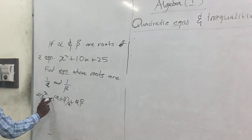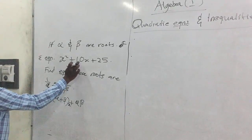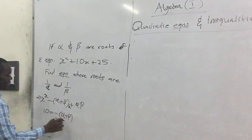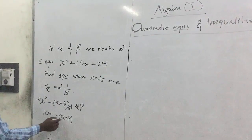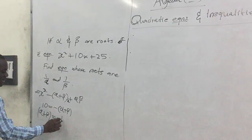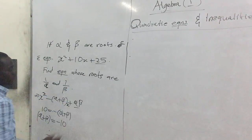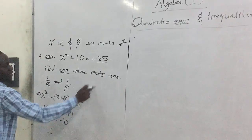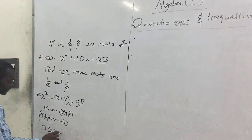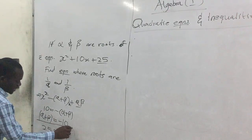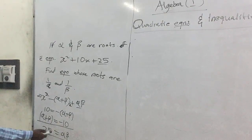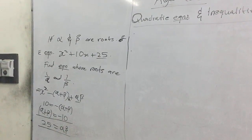Comparing, x squared equals x squared, and negative (alpha plus beta)x equals 10x, which means negative (alpha plus beta) equals 10. Dividing by negative one, alpha plus beta equals negative 10. Also comparing the product of roots, alpha times beta equals 25. So anywhere we see alpha plus beta, replace with negative 10, and alpha beta replace with 25.